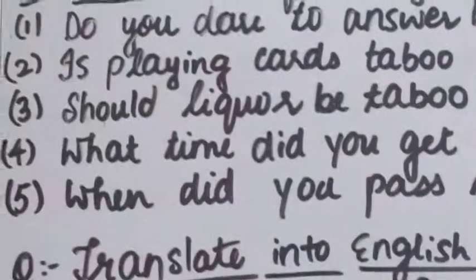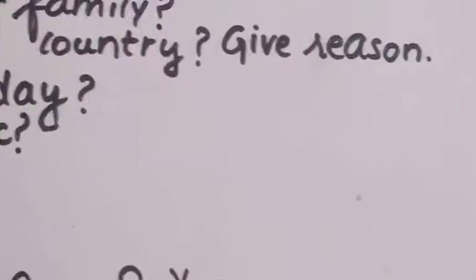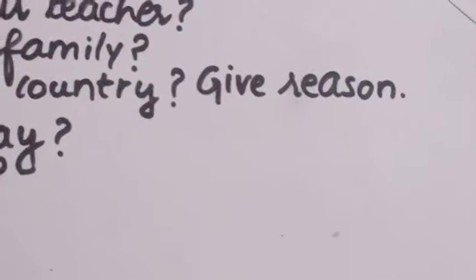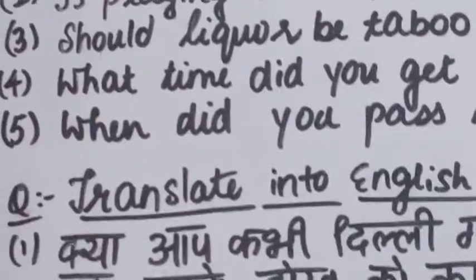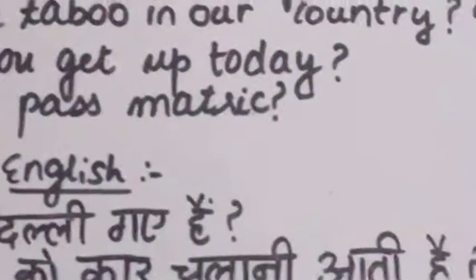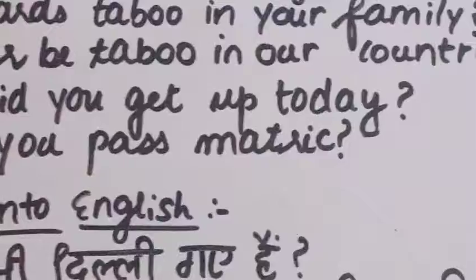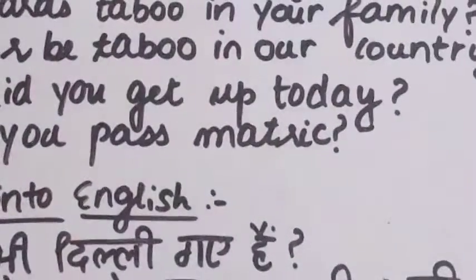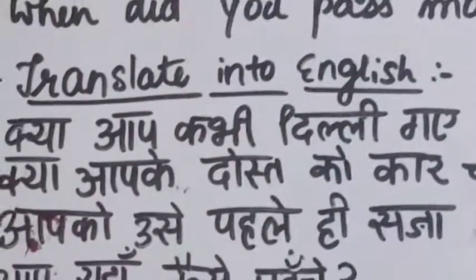Third question: should liquor be taboo in our country for the future — give a reason. Fourth question: what time did you get up today? (आज आप कितने बजे उठे थे?) Fifth question: when did you pass matric? (आपने matric कब पास किया था?) So with the help of these five questions, you have to share information about yourself.